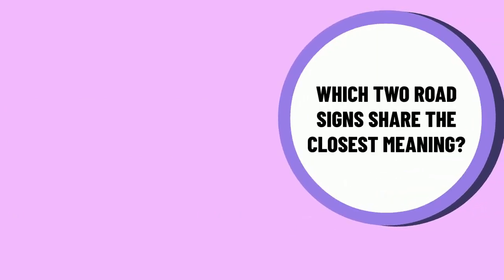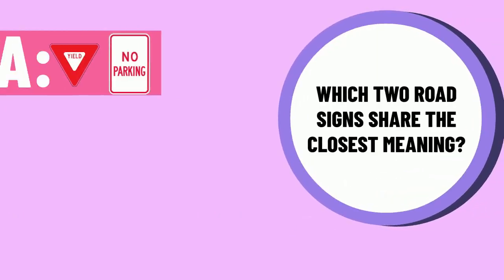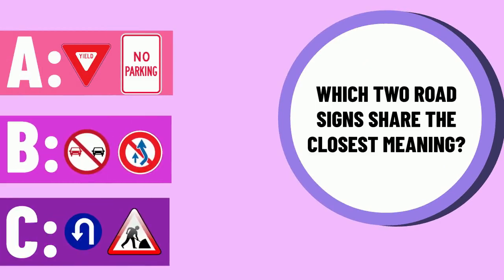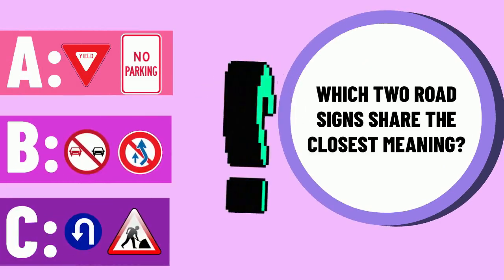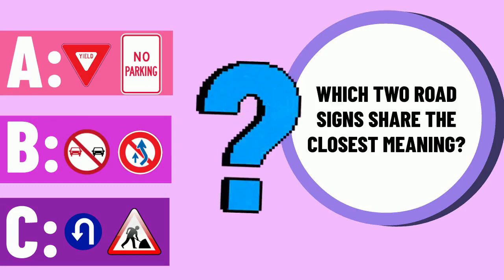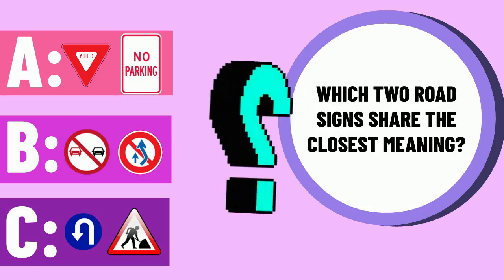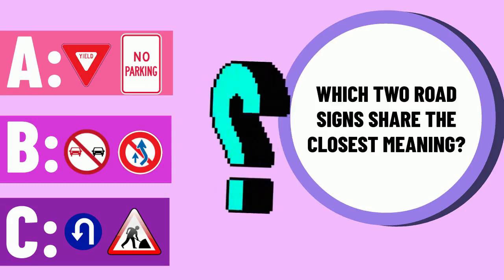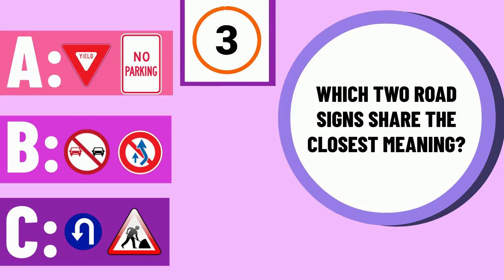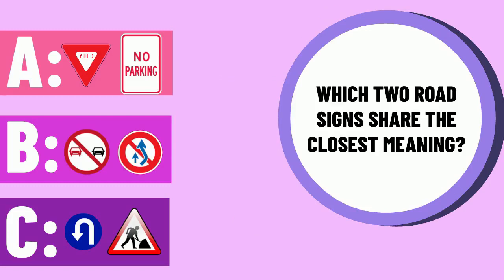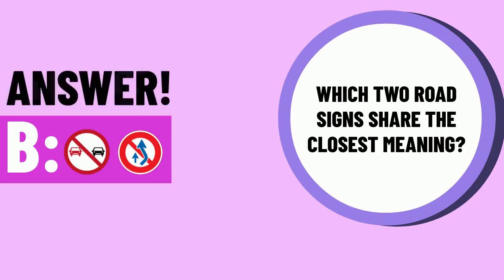Question 9. Take a look at the signs displayed — which two road signs share the closest meaning? The correct answer is B.